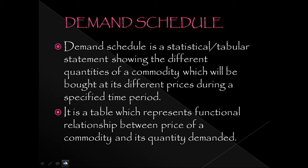A demand schedule is a table which represents the functional relationship between the price of a commodity and its quantity demanded for one particular product. It represents price and quantity demanded — meaning it is a table, a statistical statement showing that functional relationship.